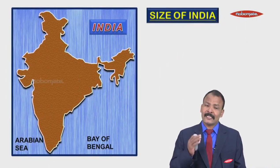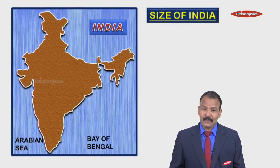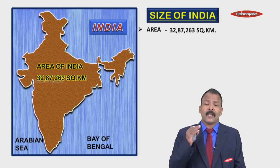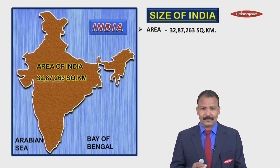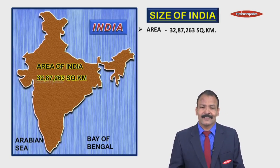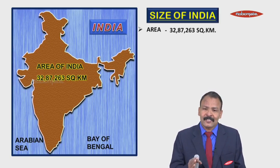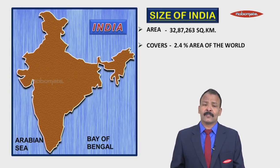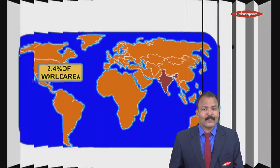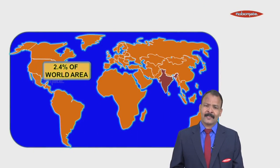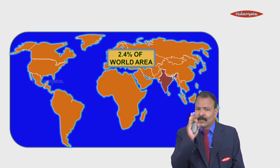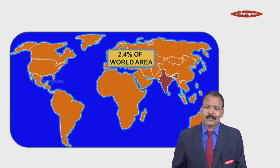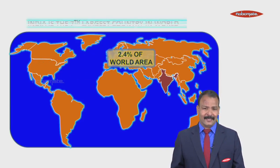Coming to the size of India, the area of India is 32 lakh 87,263 square kilometers. India covers 2.4 percent of the total area of the world. That is, if we take the entire world, India occupies only 2.4 percent of it.